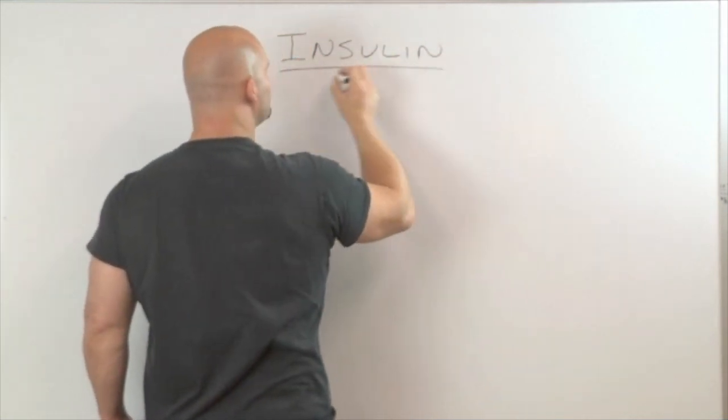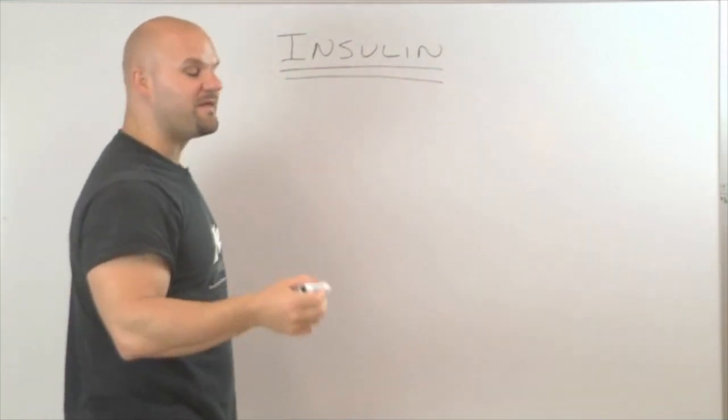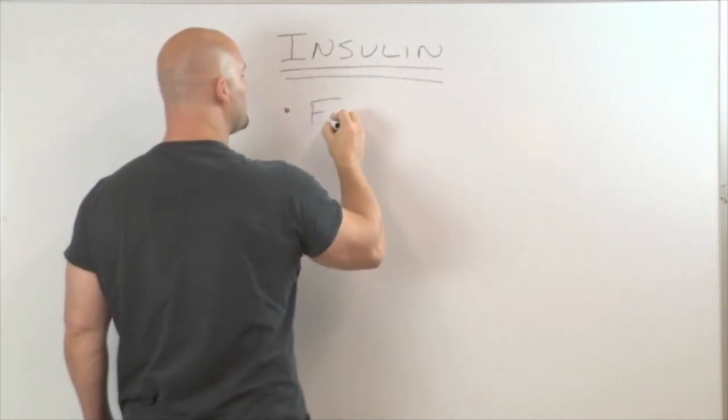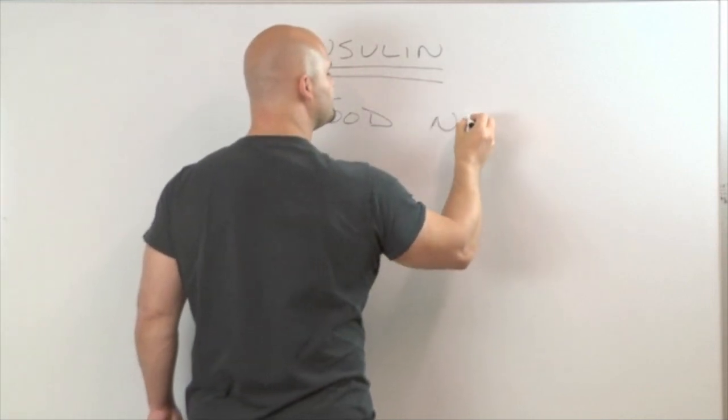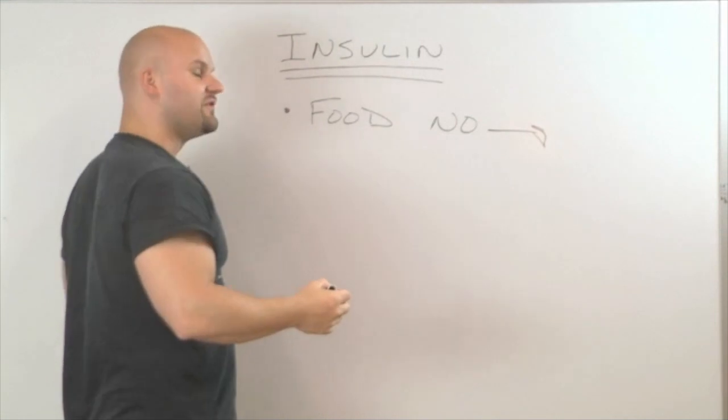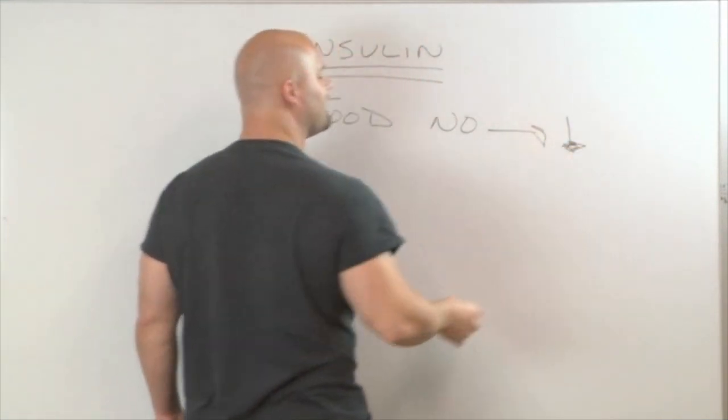The best way to do this is to just forego carbohydrates, but the fastest way to do it is to forego all food. And what happens when you forego all food? Insulin levels drop very fast.